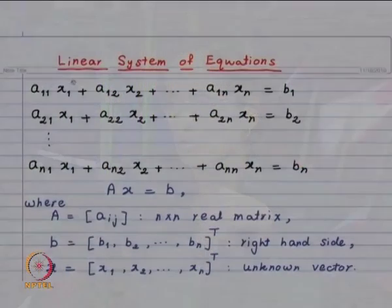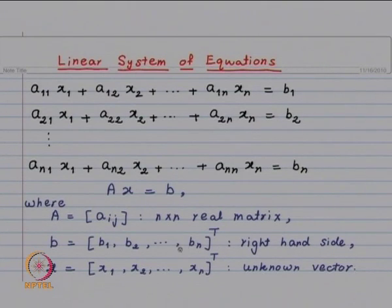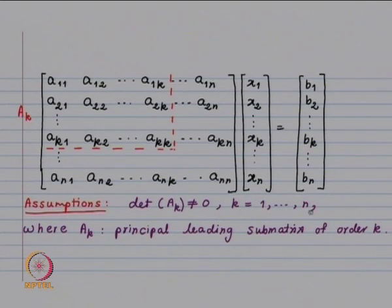Let us recall what we have done last time. We have a system of N equations in N unknowns, which we write in compact form as Ax = b. A is the coefficient matrix, b is the right-hand side vector, and x is the unknown vector x1, x2, ..., xN. We assume that matrix A is such that the principal leading submatrix — formed by the first k rows and first k columns — has determinant of Ak not equal to 0, for k = 1 up to N.